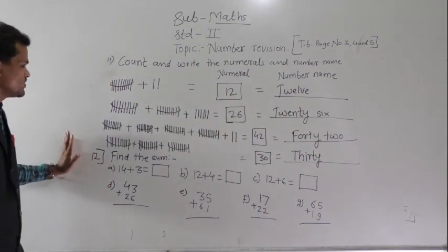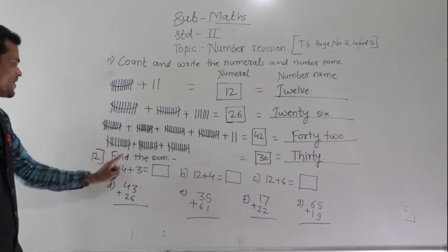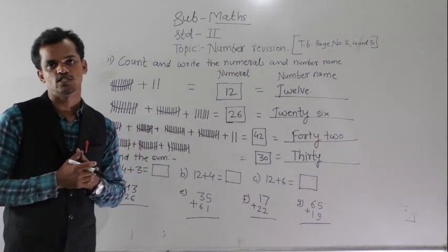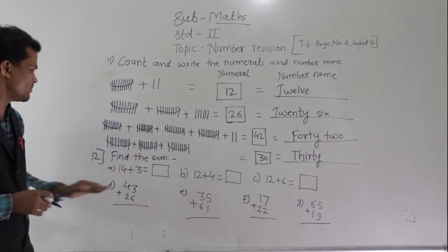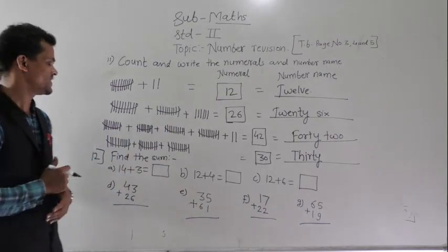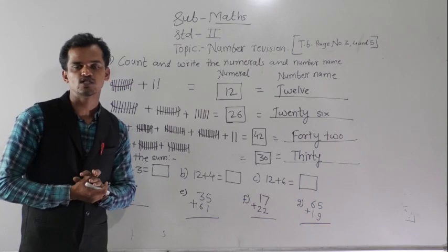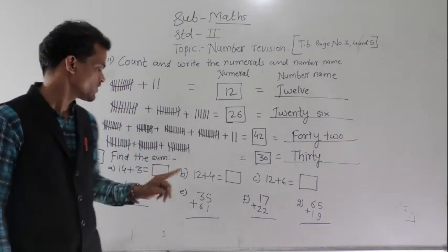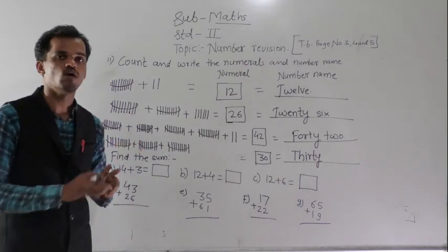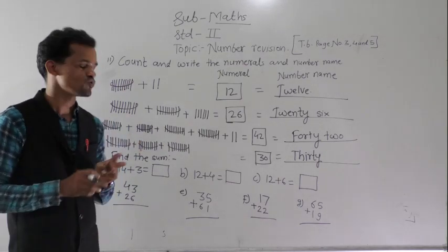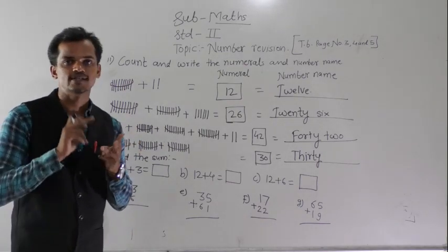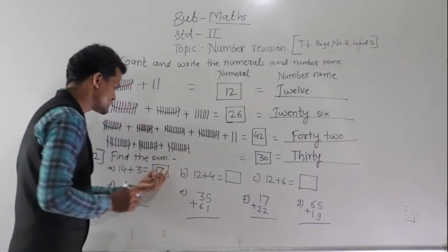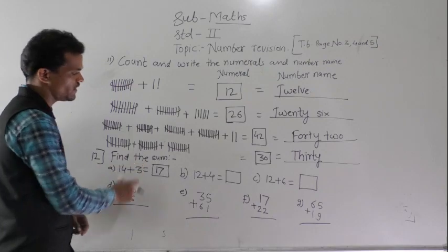The next instruction is question number 12: find the sum. Here you have to do addition. The first problem is 14 plus 3 in horizontal arrangement. Count forward by 3 from 14: 15, 16, 17. So 17 is the sum of 14 and 3.